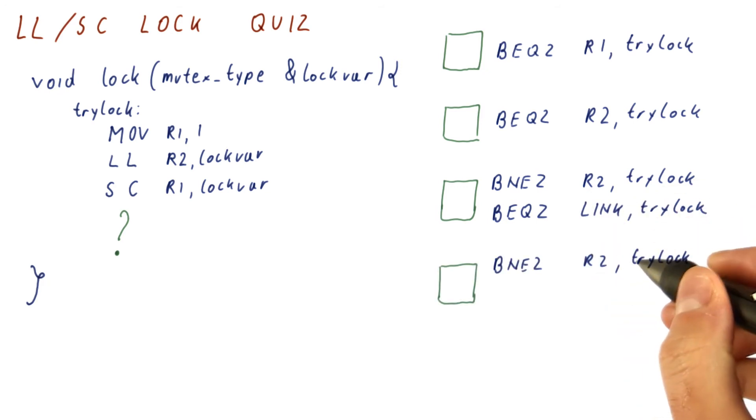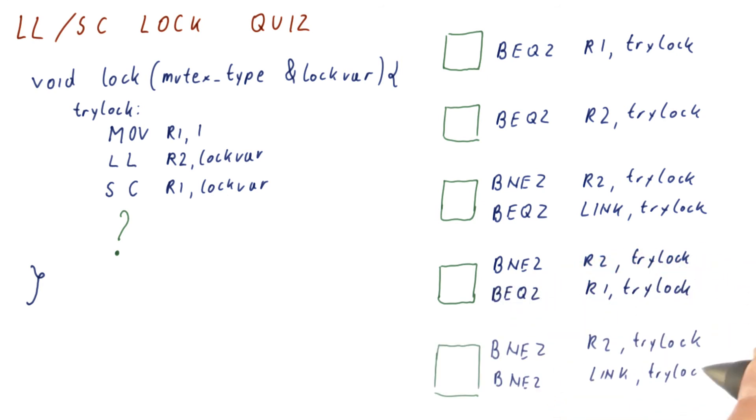The fourth option is branch on not equals 0 R2 trylock, and then branch on equals 0 R1 trylock.